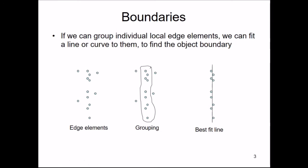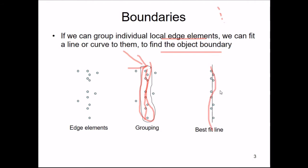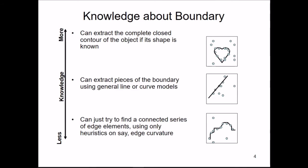If we can group individual local edge elements, we can fit a line or a curve to them, and this will result in finding the object boundary. We can group a few edge elements that fulfill some necessary condition, and the best fitting line or best fitting curve obtained is actually the boundary of the object.